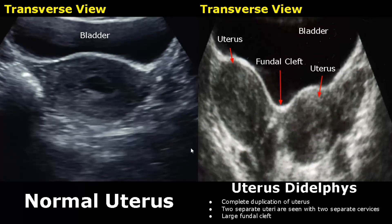These are transabdominal images of the uterus. On the left side is a transverse image of a normal uterus. We can see the normal myometrium and normal endometrial canal. This is the bladder anterior to the uterus.